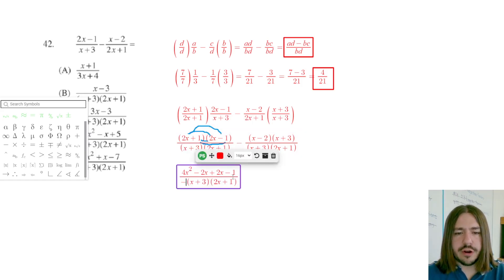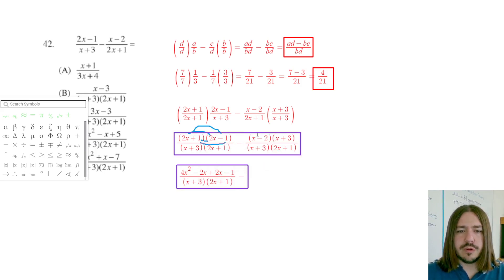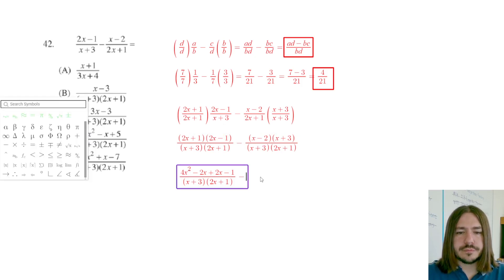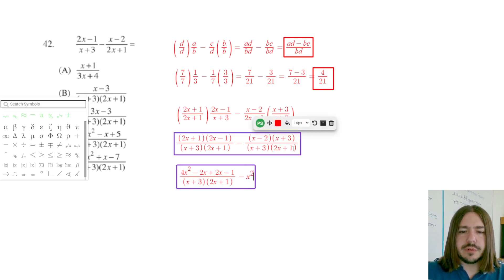And then the numerator of the second fraction, I can throw this in there. We got to multiply this out. So same deal here. In fact, I'm going to erase these little markings because it's getting kind of messy. I'm going to multiply x times x. And so that's going to be x squared. And then x times three is going to be plus three x. X times negative two is negative two x. And three times negative two is going to be negative six. And all of that is over x plus three times two x plus one.